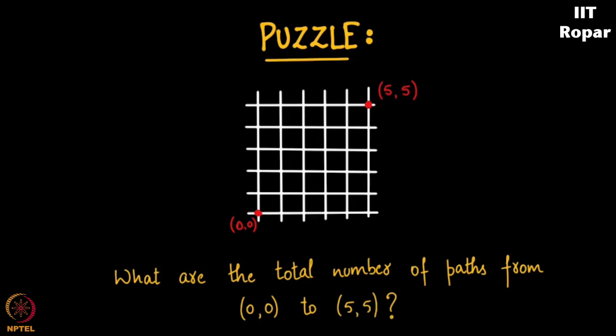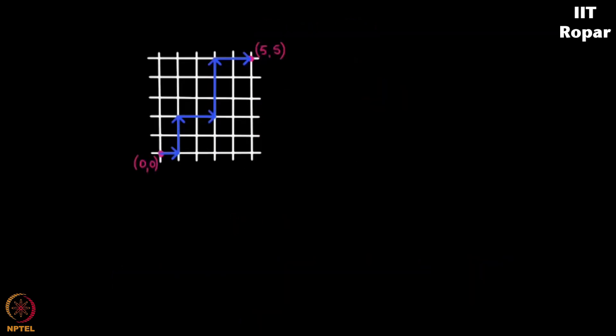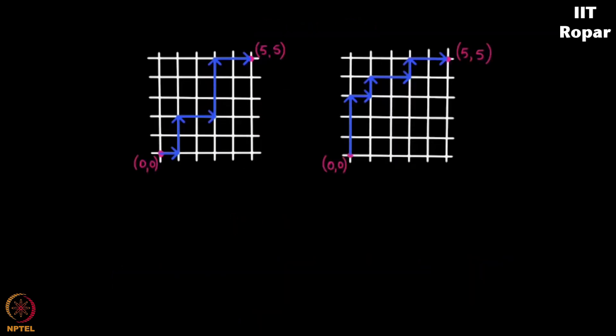What I mean here is this is one path to reach 5,5. This is another path to reach 5,5. So the question is in how many ways can I reach 5,5 if I start from 0,0? Think about it. Please try solving this problem.